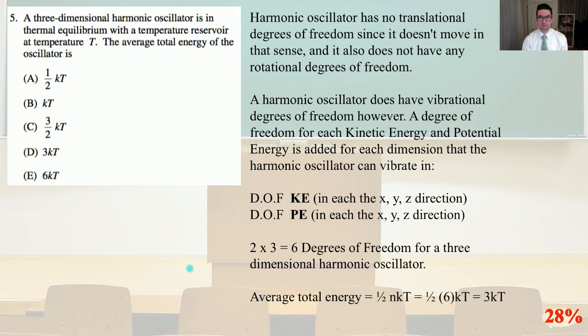A harmonic oscillator has no translational degrees of freedom since it doesn't move in that sense, and it also does not have any rotational degrees of freedom. A harmonic oscillator does have vibrational degrees of freedom, however. A degree of freedom for each kinetic energy and potential energy is added for each dimension that the harmonic oscillator can vibrate in.